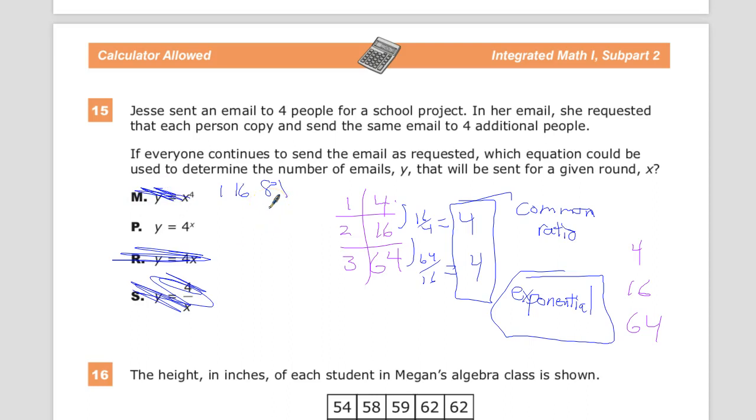When you have an exponential equation, the exponent of your input, your exponent should be your input value. So whatever your x is or your independent variable, that should be in the exponent's place. So this is it. Four to the first is four. Four to the second is 16. Four to the third is 64.